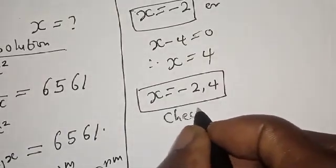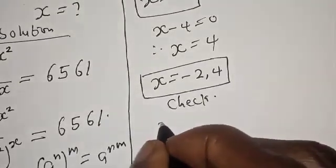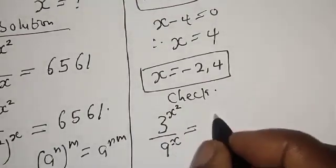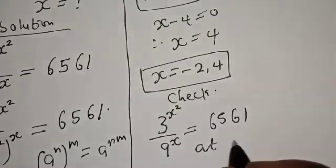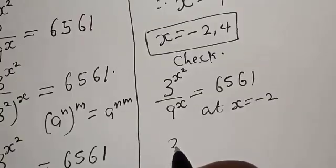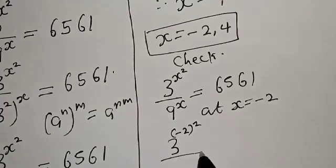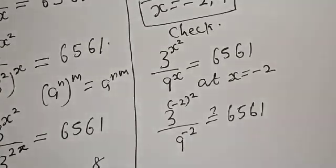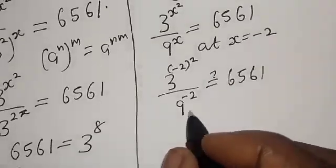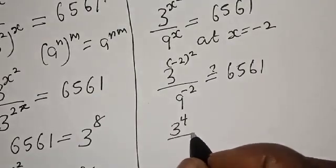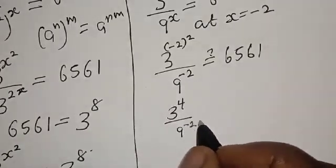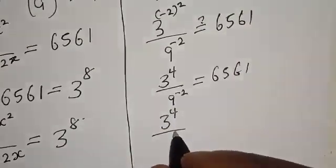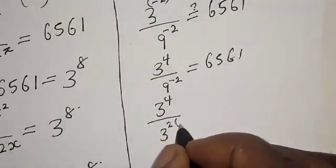We check the given equation: 3 raised to power s squared over 9 raised to power s equals 6561. At s equals minus 2: 3 raised to power (minus 2) squared over 9 raised to power minus 2 must equal 6561. Since minus 2 squared is 4, we get 3 raised to power 4 over 9 raised to power minus 2. Rewriting 9 as 3 squared: 3 raised to power 4 over 3 raised to power 2 times minus 2 must equal 6561.